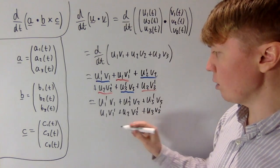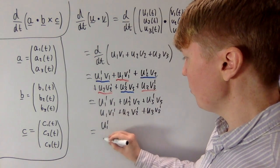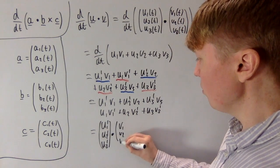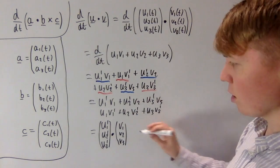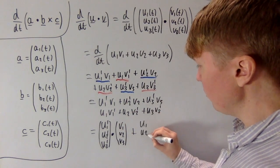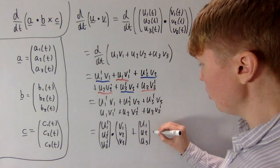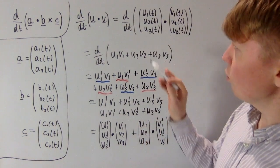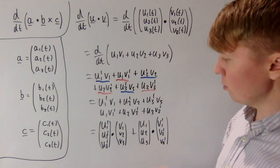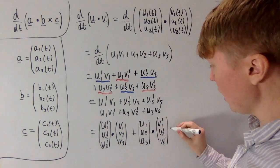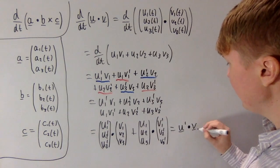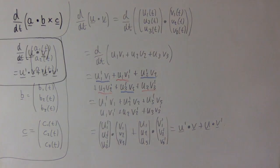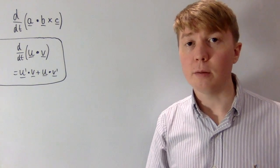This is starting to look like scalar products of certain vectors. The first group, (u1', u2', u3') dotted with (v1, v2, v3), corresponds to our first three terms. The remaining terms are u = (u1, u2, u3) dotted with the derivative of v. Since differentiating a vector is done component-wise, this is exactly u' · v + u · v'. So we have a nice expression for the derivative of the dot product of two vectors.